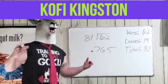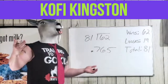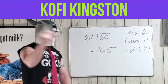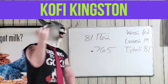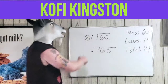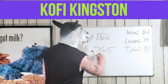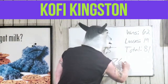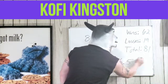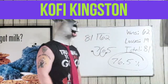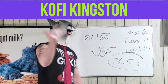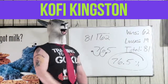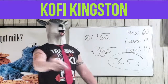Everyone knows the song already — decimal to percent is 'move two to the right.' So we move the decimal two places to the right. Boom! We get 76.5%. Our boy Kofi's been cooking people at a rate of 76.5% of the time. That's why he's the champ.